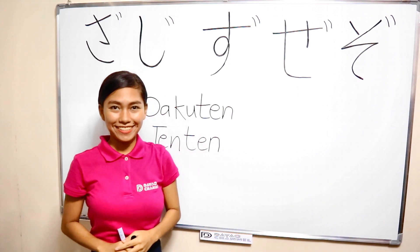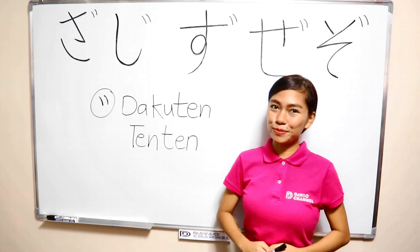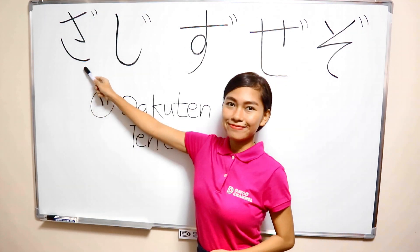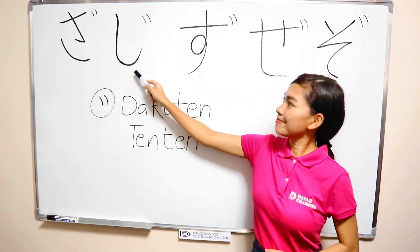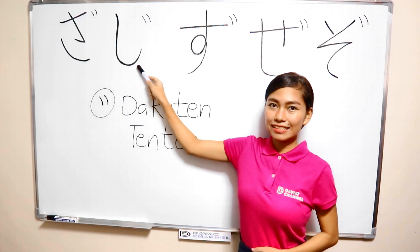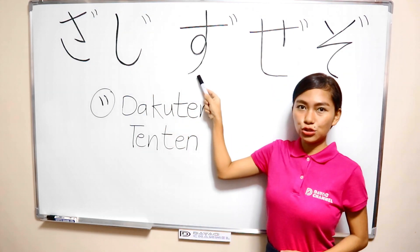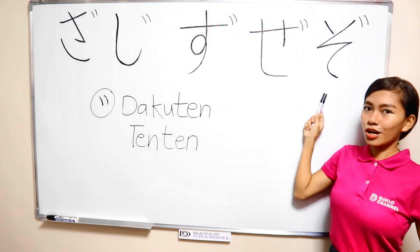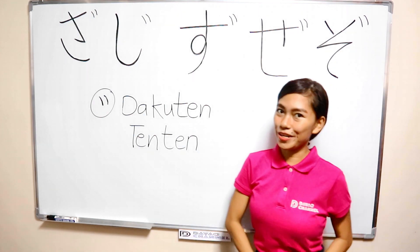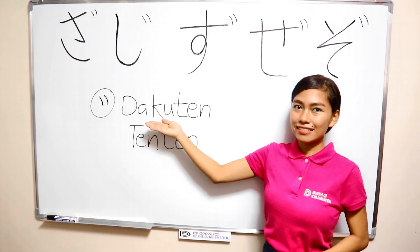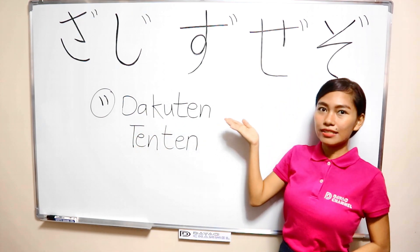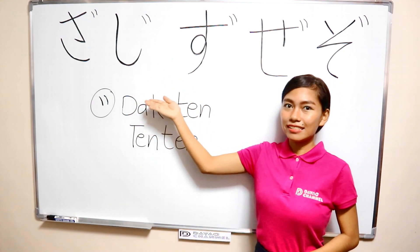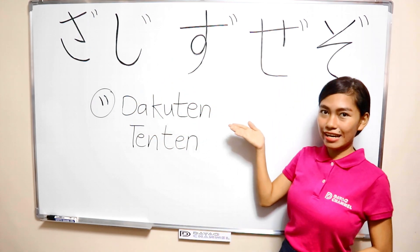Alright. So now, let's pronounce it together. Za. Ji. Zu. Ze. Zo. One more. Za. Ji. Zu. Ze. Zo. Last one. Za. Ji. Zu. Ze. Zo.